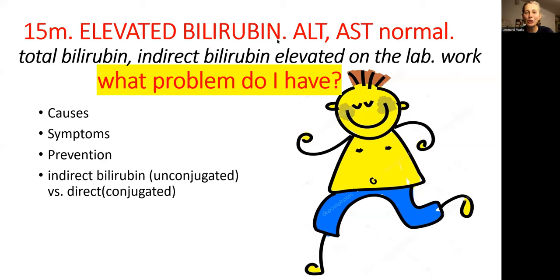I am not going to talk about elevated ALT and AST in this case, because they get elevated when the damage to the liver by alcohol or by virus is done, and this is not the topic of today's presentation. Only total bilirubin and indirect bilirubin. So you get laboratory work and you see those two numbers elevated and you're thinking, what is going on in my body?